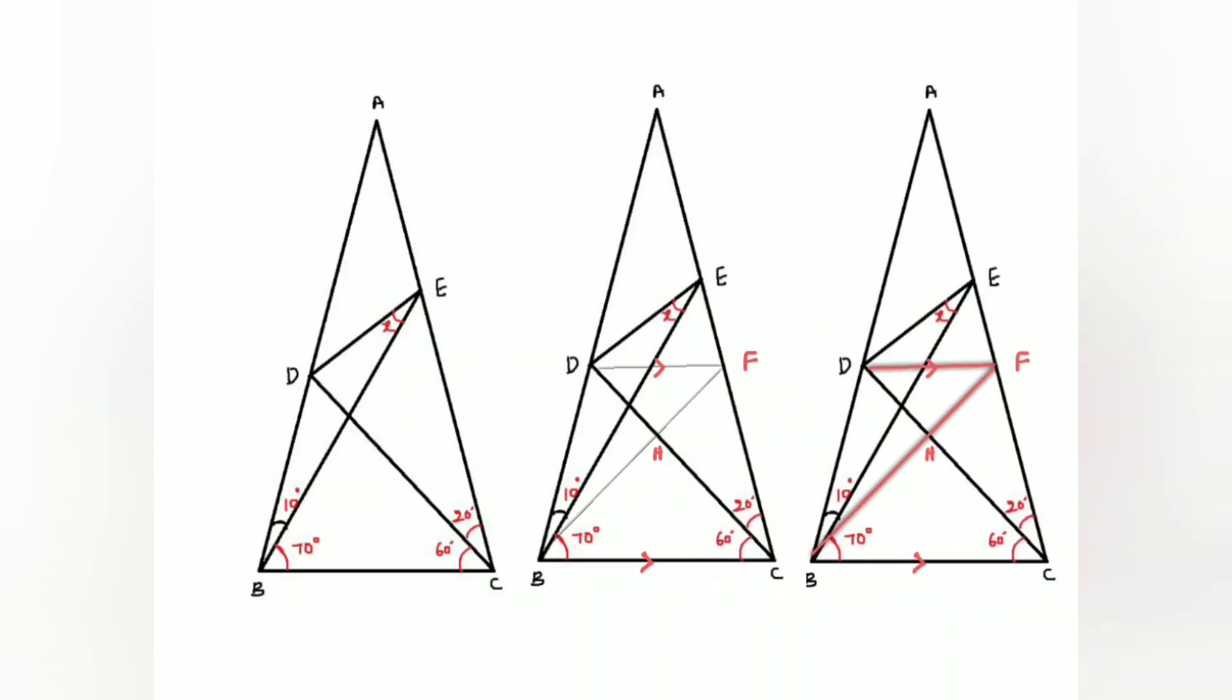Now look, in this triangle, this angle is 20 degrees and this angle is also 20 degrees. Therefore, I can say triangle AFB is isosceles. Therefore, I can say AF is equal to BF.